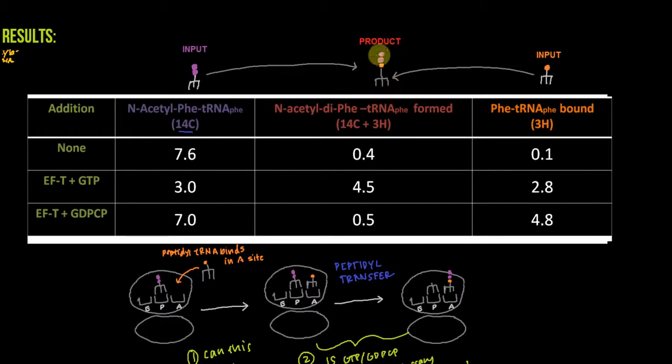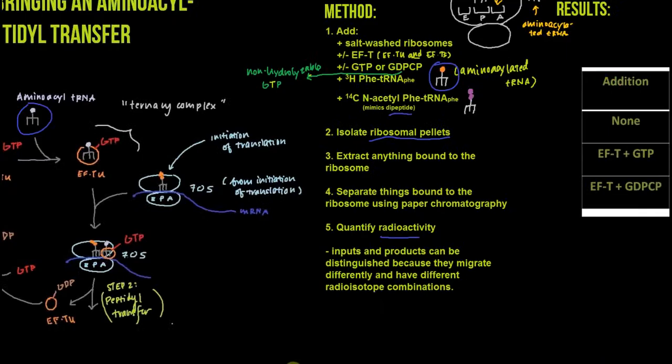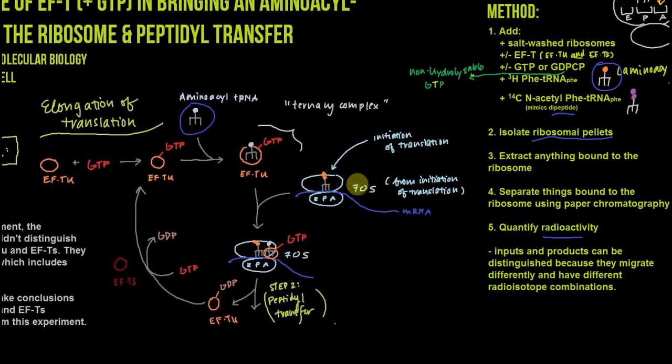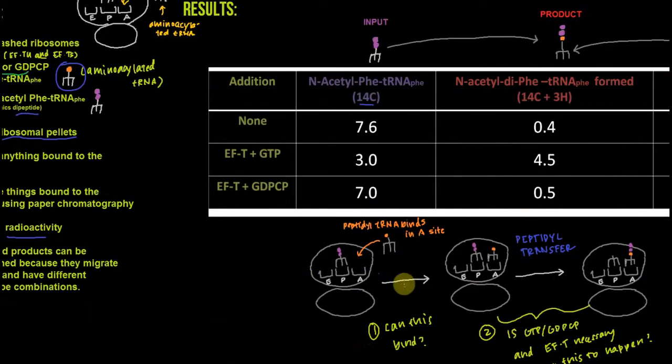How is this product formed? I want to show you a visual representation so you can better understand. When this starts, we're bringing in the 70S ribosomal complex from the initiation of translation. This tRNA that's shown here as being charged with a dipeptide is already on there from what I drew over here. We have our dipeptide in the P-site and then a peptidyl-tRNA will bind in the A-site.